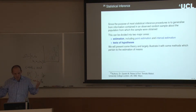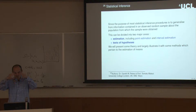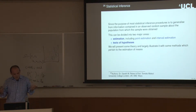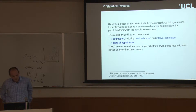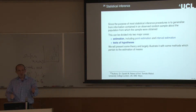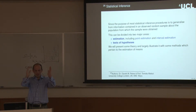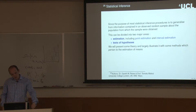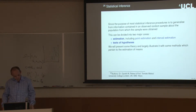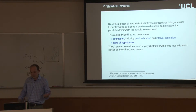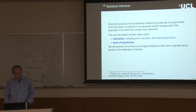The purpose of statistical inference is to generalize from our small sample to the population. We can do this in two ways: firstly, estimation — which includes point estimation (a single value) or interval estimation (a range of values with a confidence level); and secondly, hypothesis testing.